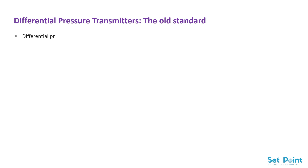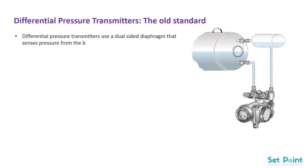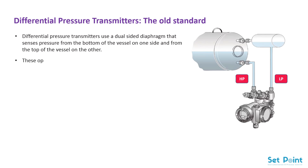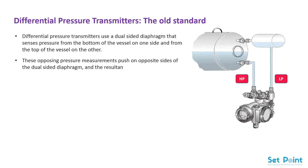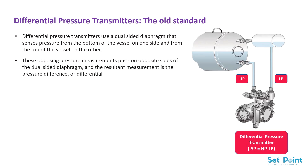Differential pressure transmitters — the old standard. Differential pressure transmitters use a dual-sided diaphragm that senses pressure from the bottom of the vessel on one side and from the top of the vessel on the other. These opposing pressure measurements push on opposite sides of the dual-sided diaphragm and the resultant measurement is the pressure difference, or differential pressure.